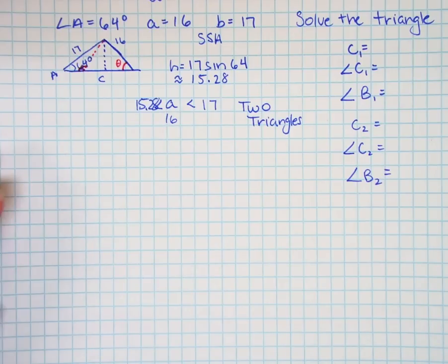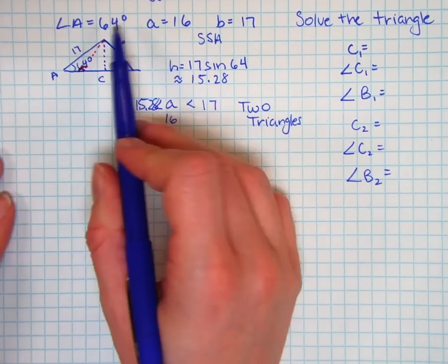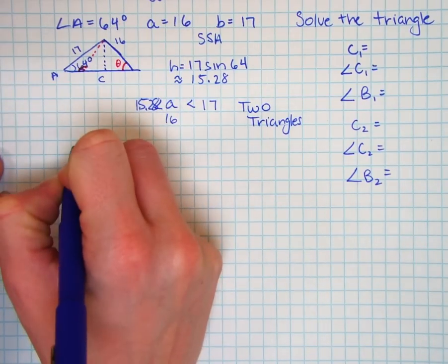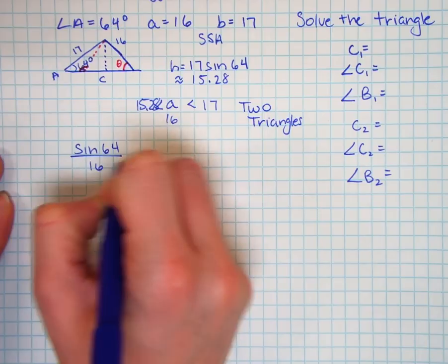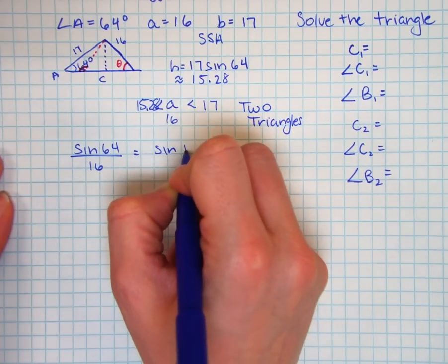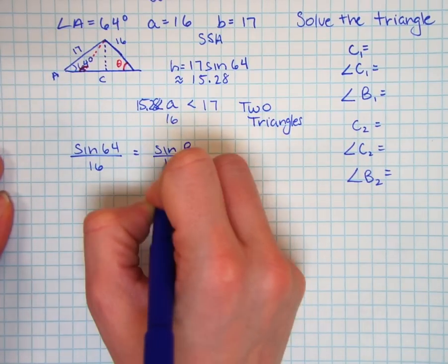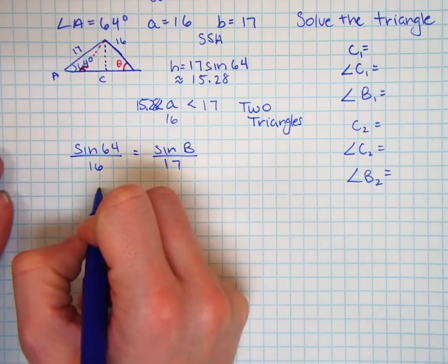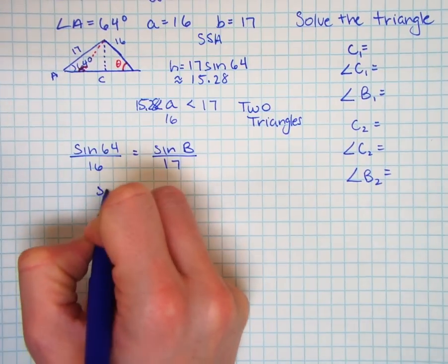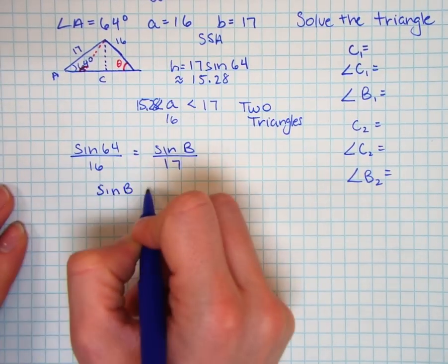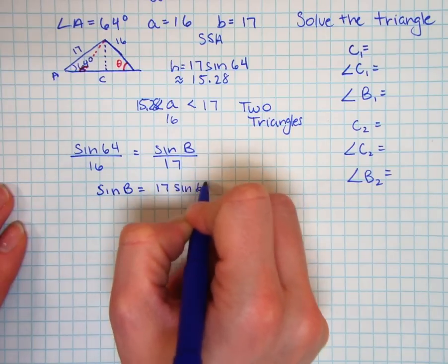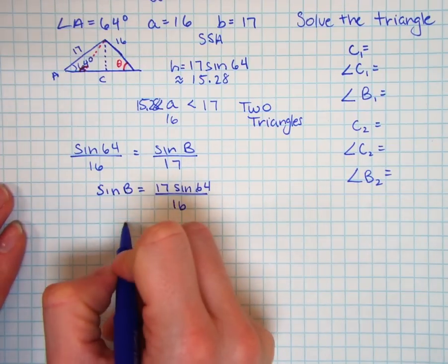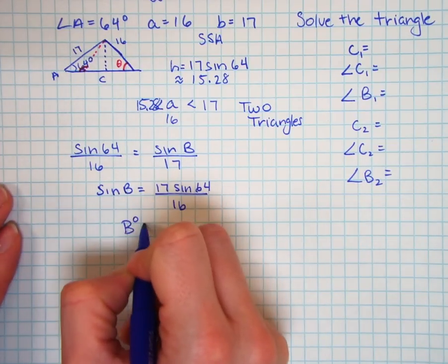So let's begin to solve. I have both sides and one angle. So I'll find sine of 64 over 16 is equal to sine of B over 17. So sine of B will be equal to 17 sine 64 over 16.